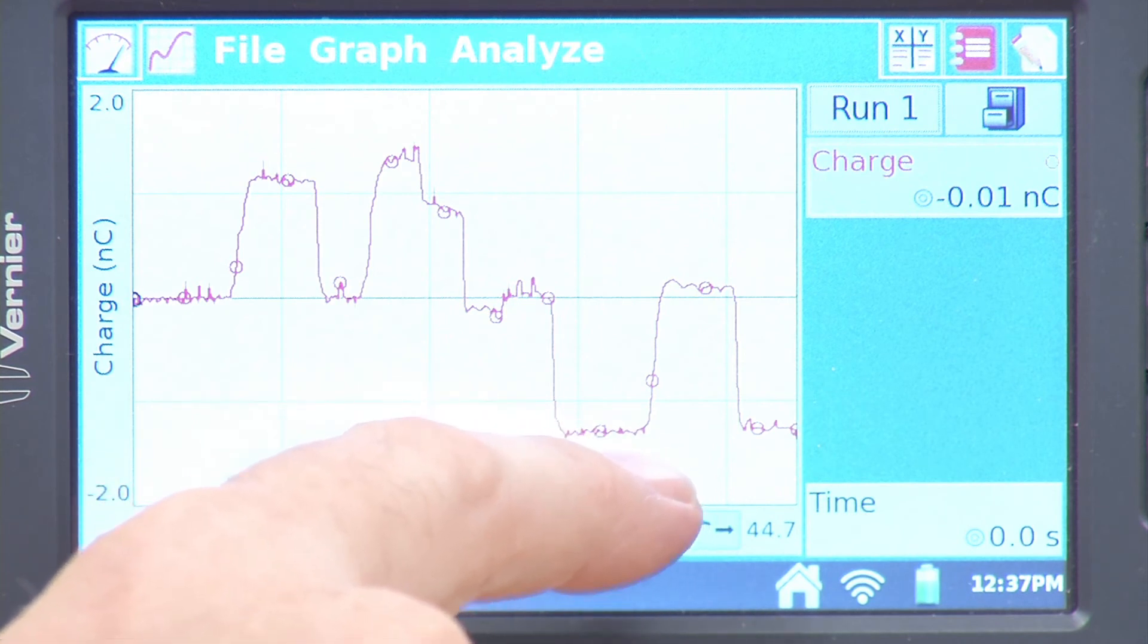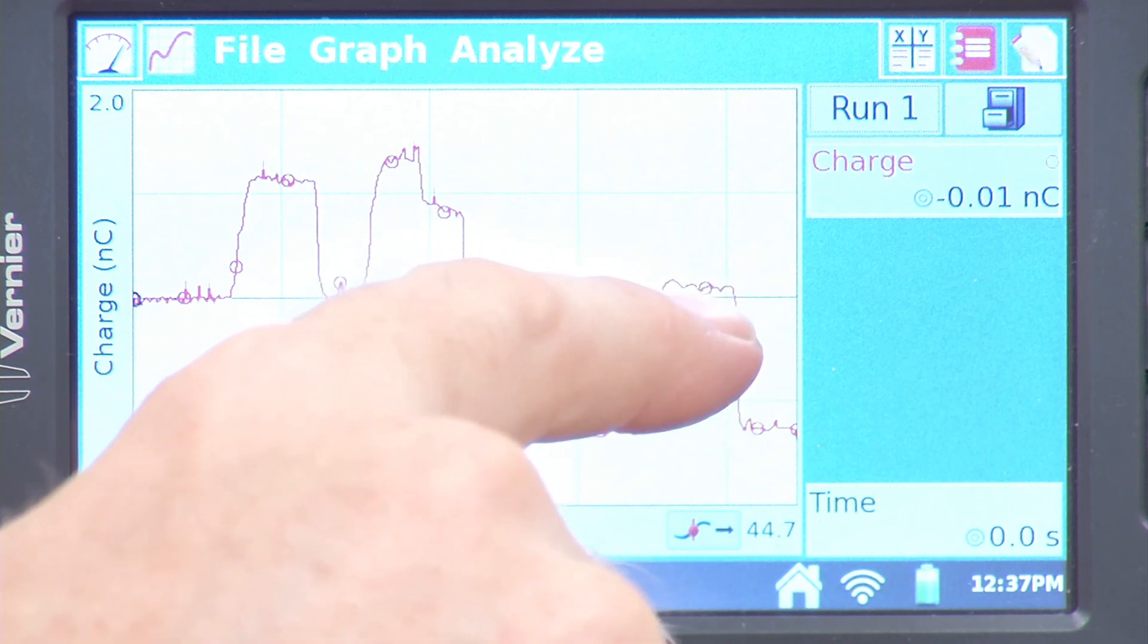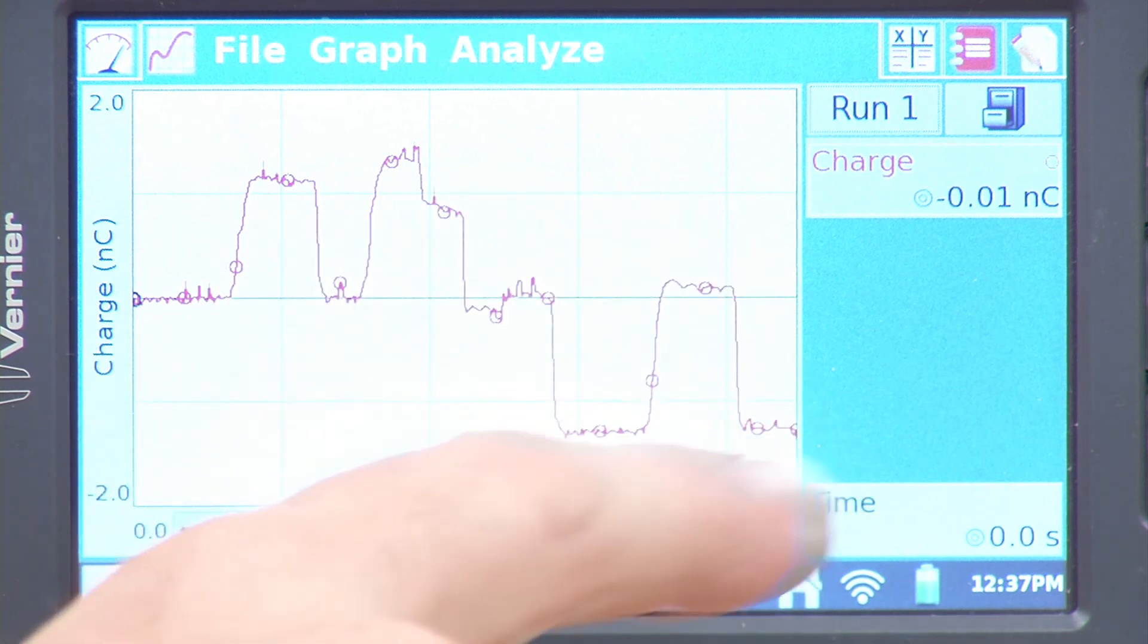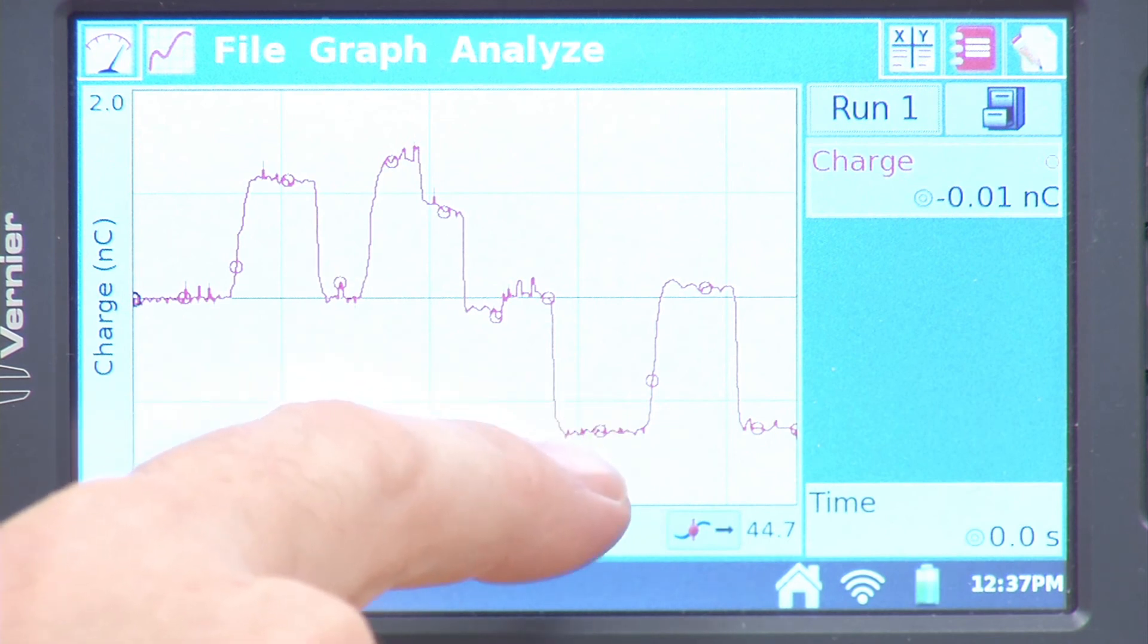and if we stick the charge separator back in again, then it seems to go back towards zero, and then if we move it, it goes back down. What's happened here is that we've actually moved electrons from the ground plane to the inside pail by attaching it to the ground.